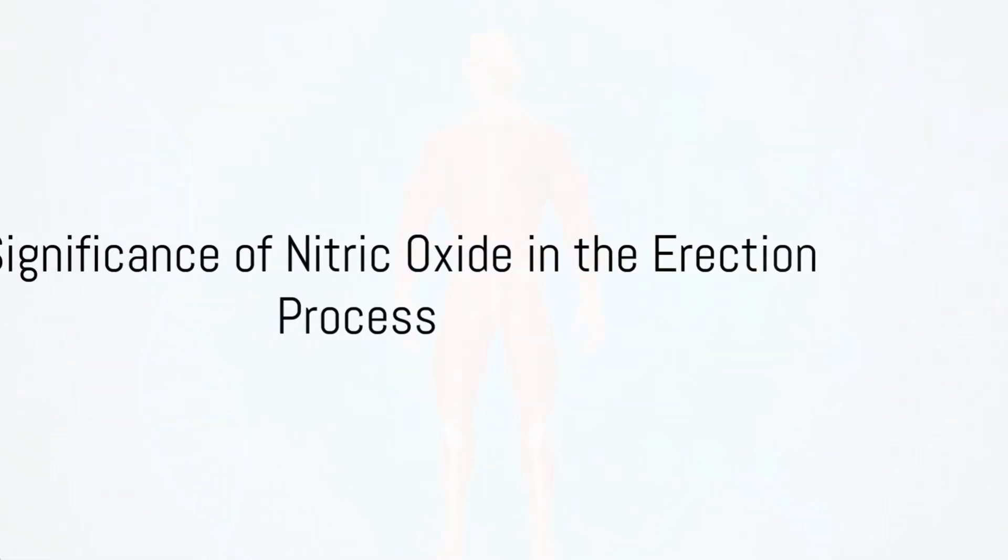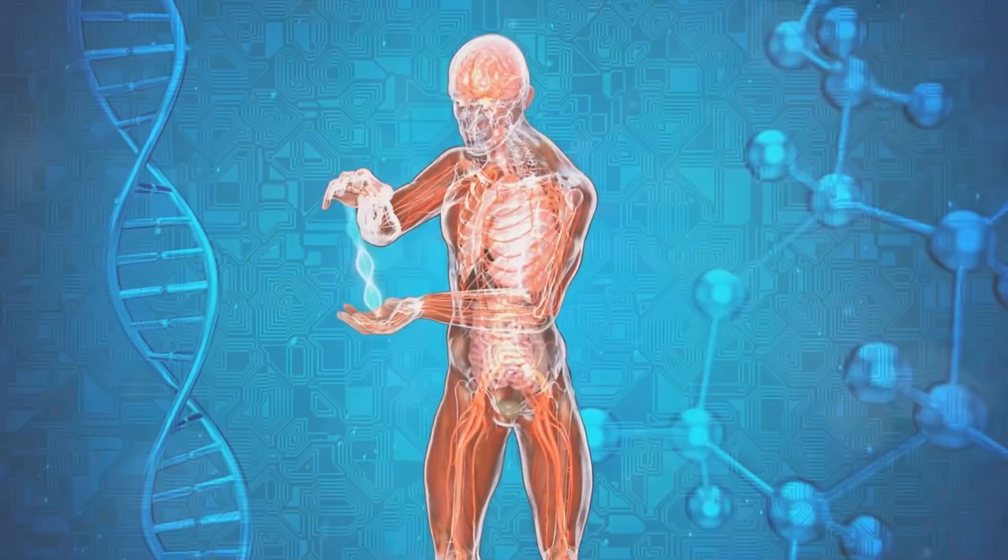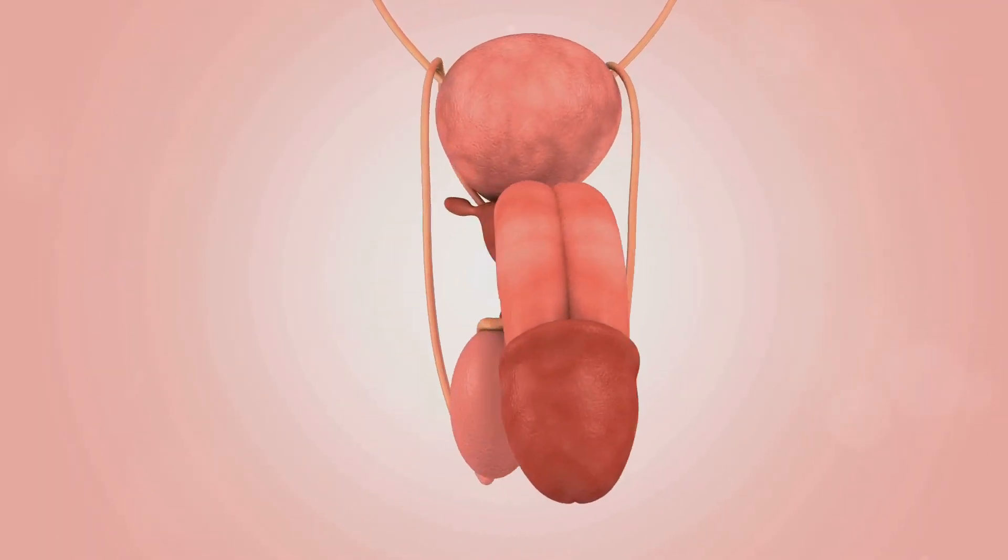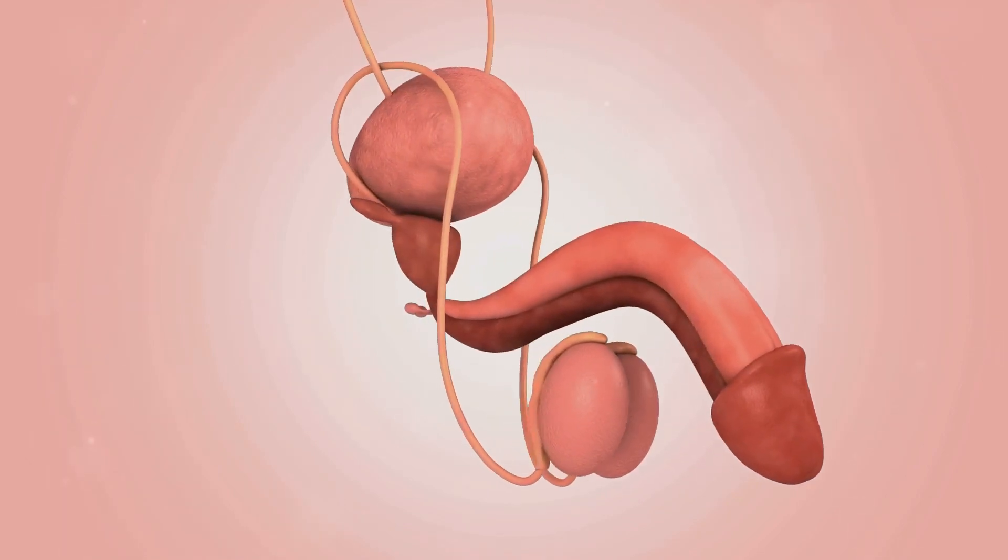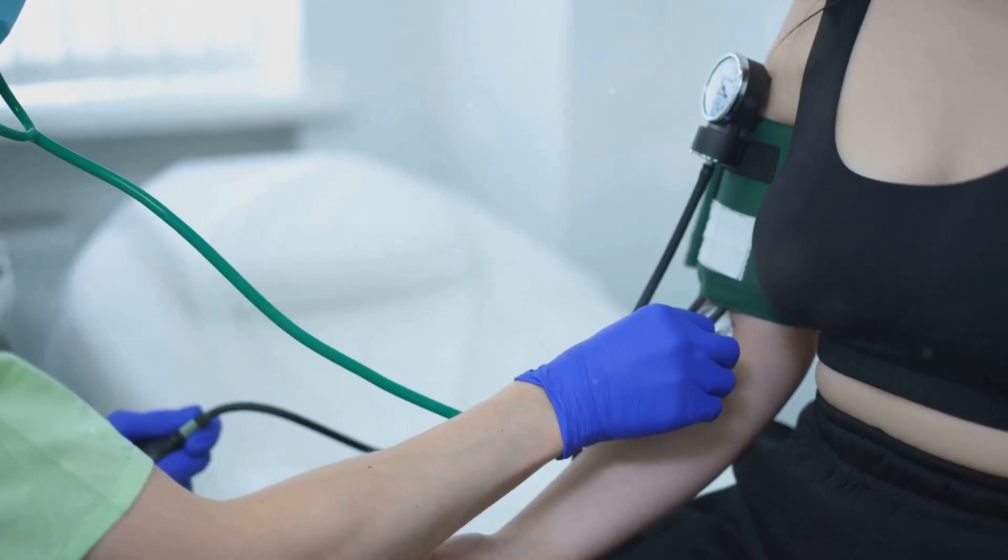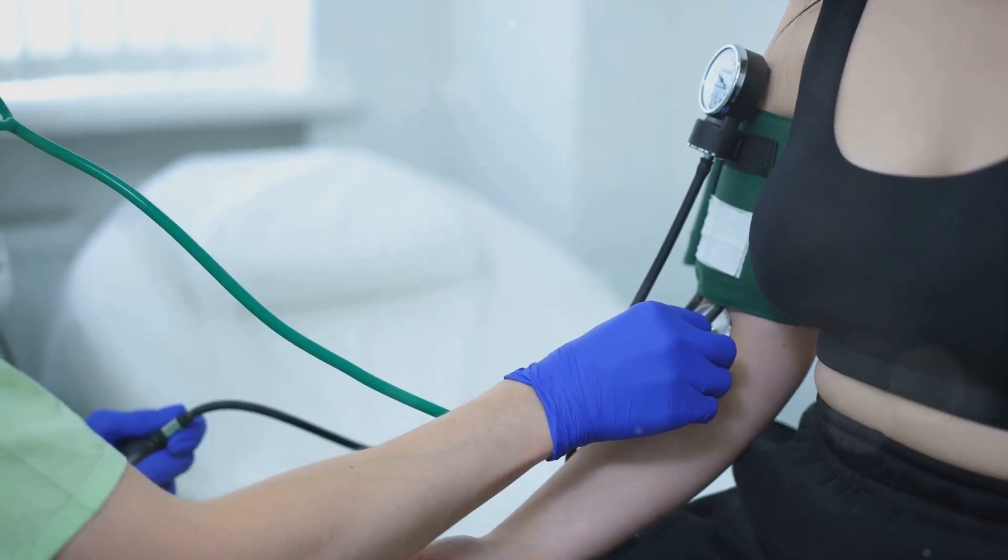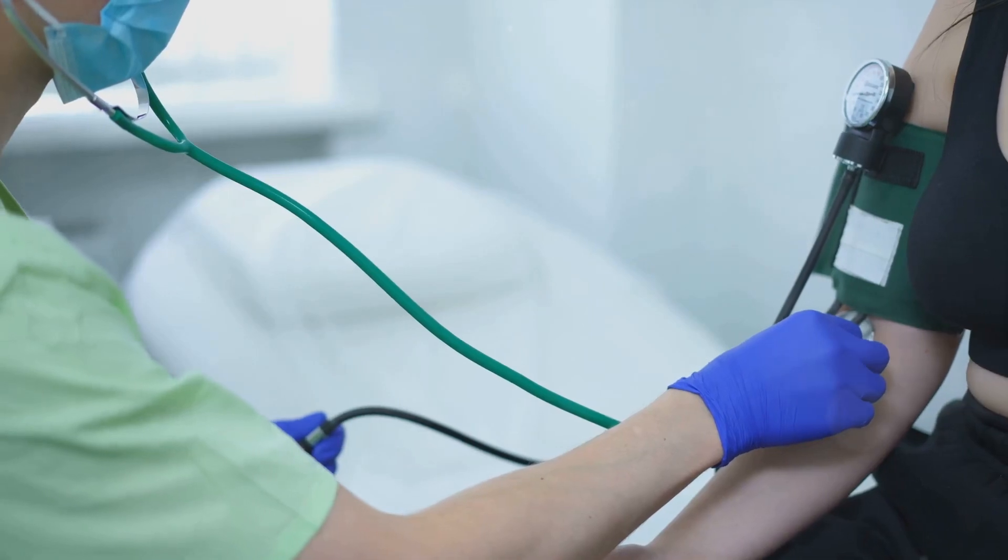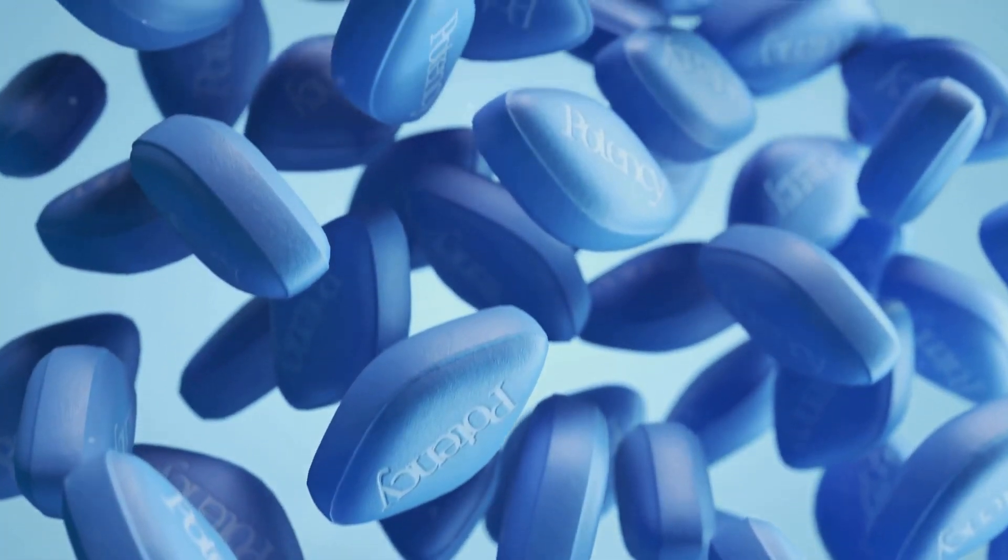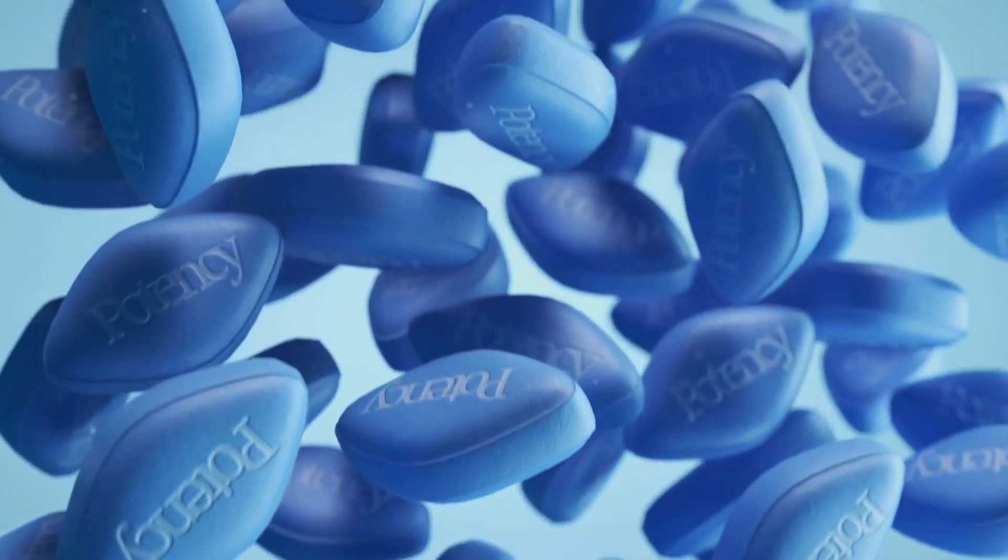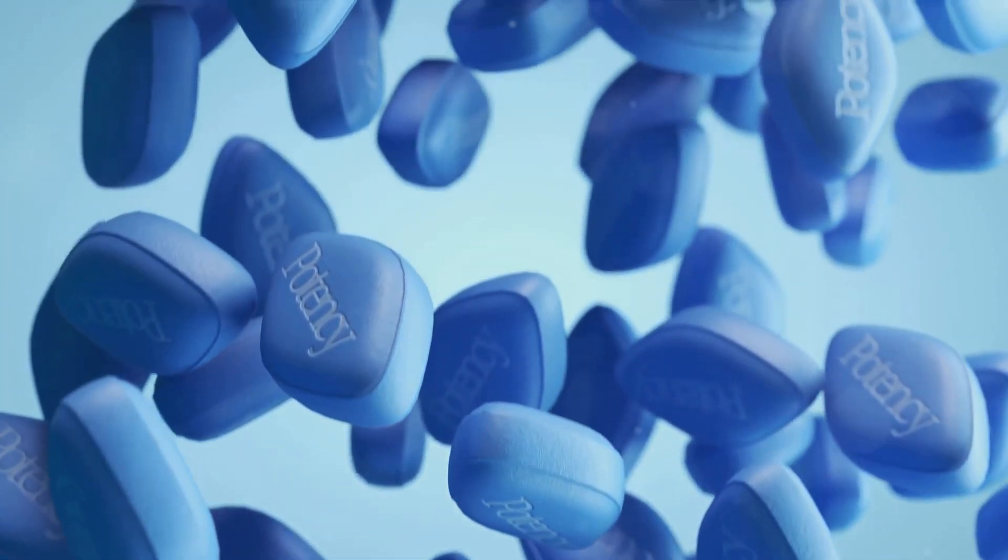To summarize, the erection process involves a complex interplay of physiological signals and chemical messengers, with nitric oxide playing a pivotal role. It's released in response to sexual arousal, causes relaxation of smooth muscle and vasodilation in the penis, and helps to maintain the erection by trapping blood within the corpora cavernosa.